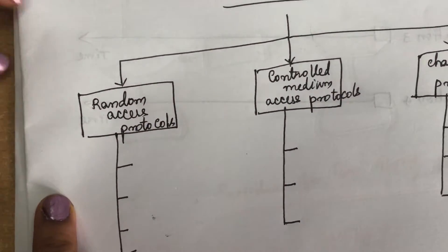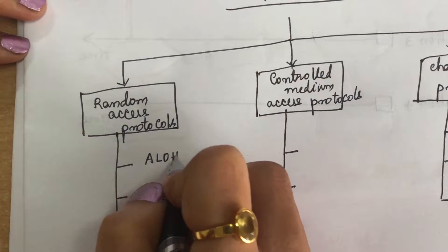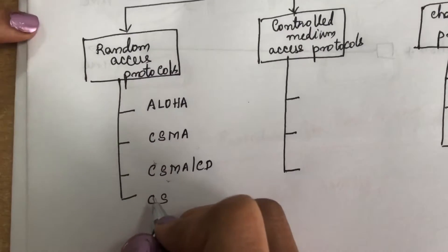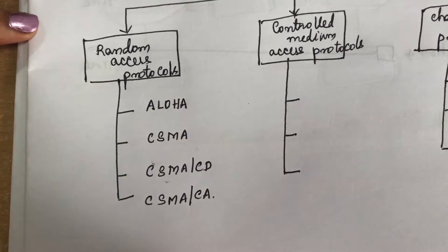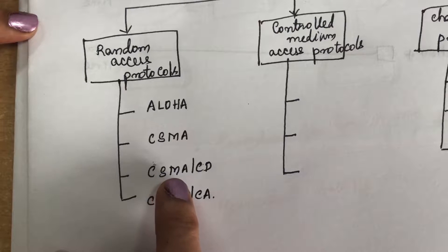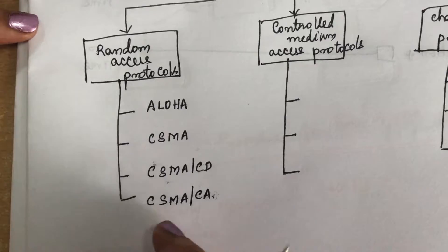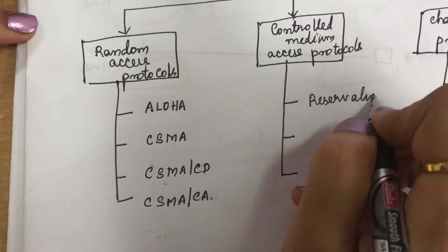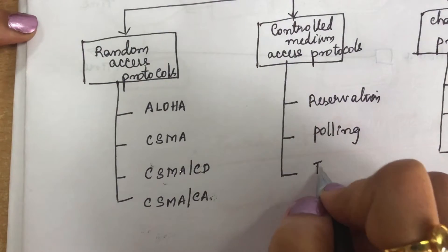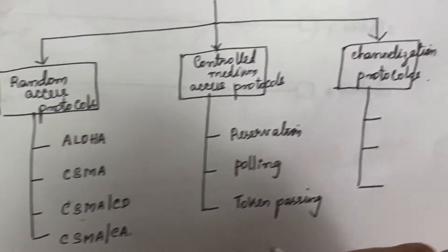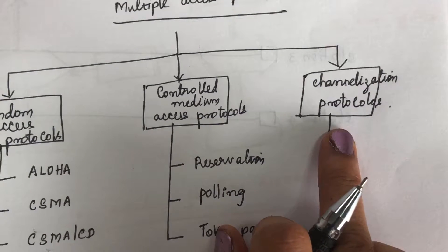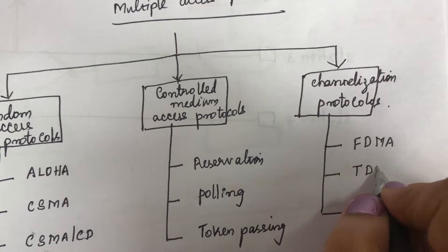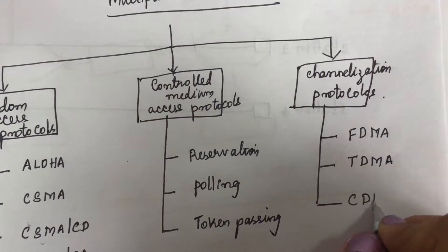Under random access protocols, we have four: ALOHA, CSMA, CSMA/CD (carrier sense multiple access collision detection), and CSMA/CA (carrier sense multiple access collision avoidance). In controlled medium access protocols, we have three: reservation method, polling, and token passing. For channelization protocols, we have FDMA (frequency division multiple access), TDMA (time division multiple access), and CDMA (code division multiple access).